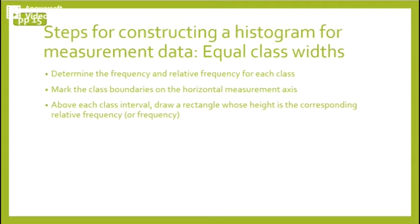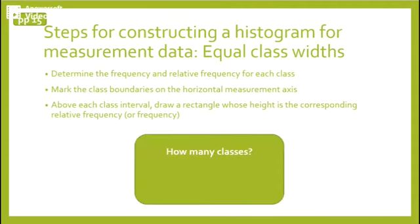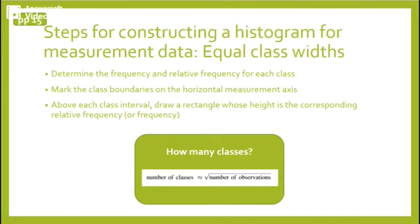Then you might ask yourself, in how many classes are you going to divide your horizontal scale? On page 16, they define a reasonable rule of thumb, which is the number of classes can be more or less equal to the square root of the number of observations.